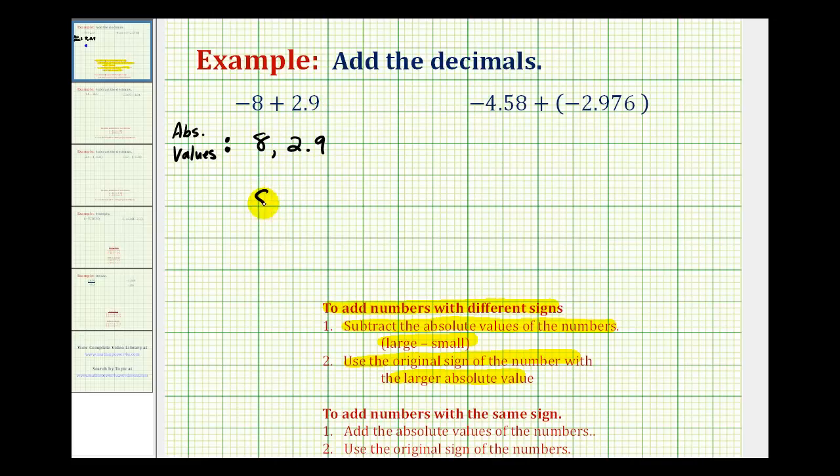So we're going to have eight minus 2.9. And notice when writing this vertically, we do want to line up the corresponding place values. And we probably also want to put a decimal point here and a zero in the tenths place value. Now I'll bring the decimal point down into our difference and subtract as we normally would. Notice how we have to borrow from the eight. So this would be ten minus nine. That's one and seven minus two is five.